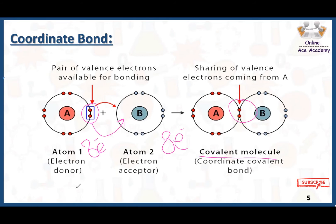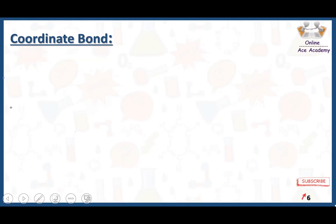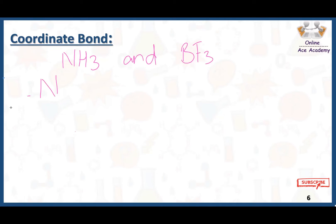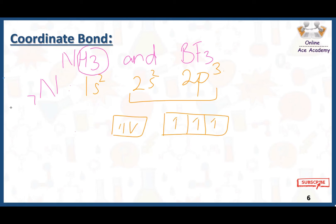The resulting molecule is called a covalent molecule. A very famous example of coordinate bond is between NH3 and BF3. The atomic number of nitrogen is seven, with electronic configuration 1s², 2s², 2p³. In the valence shell of nitrogen there are five electrons. After the three hydrogens form bonds, two electrons remain as a lone pair and will act as the donatable shared electrons.